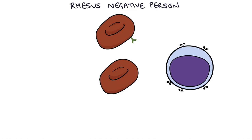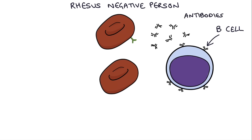For example, if you were transfused with blood that contained the rhesus antigen and your body didn't have it, your B cells would recognize it as foreign, launch an immune response, and create antibodies against that rhesus antigen — and we call these anti-D antibodies.